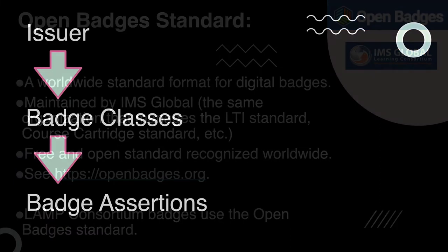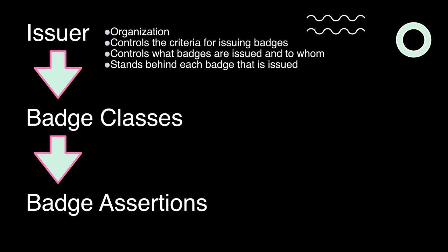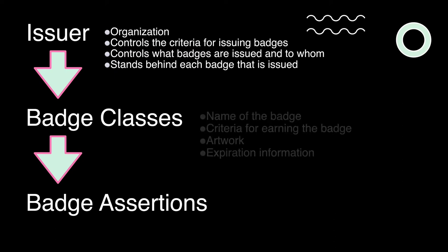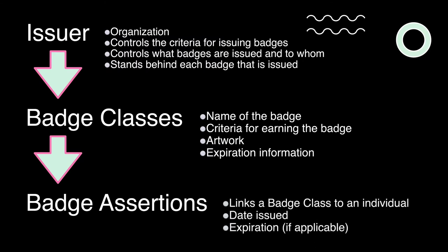Let me talk about how the open badges standard works. There are three layers — and there are actually more, but this is badging made simple. The three layers are: the issuer, the badge class, and the badge assertion. The issuer is the organization that issues badges and controls the criteria — your institution could be an issuer. The badge class is basically the badges you issue: it has the name, the criteria, and the artwork, plus expiration information if applicable. Then there's the badge assertion, which links a badge class to an individual — it says this badge was issued to this person on such and such a date, and if it expires, it explains that too.